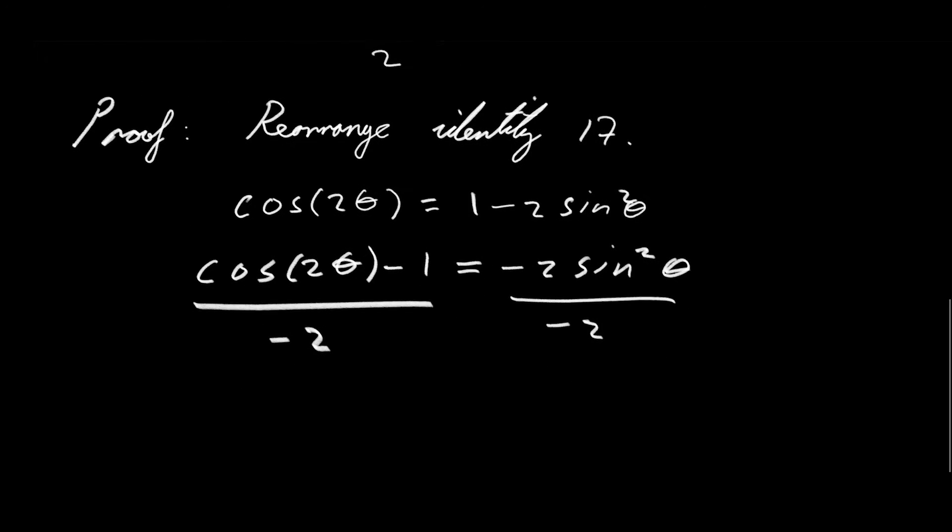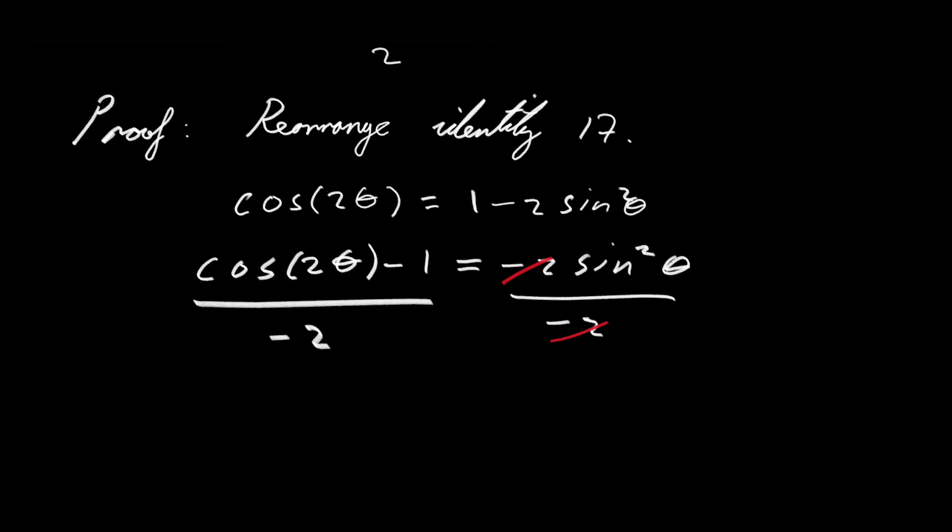Now, on the right-hand side of the equation, you see that we have common factors of negative 2, so they cancel, and you can distribute this negative sign into the numerator on the left-hand side of the equation. If we do this, we are left with (1 - cos 2θ)/2 = sin²θ. And that's precisely the identity that we wanted to prove.